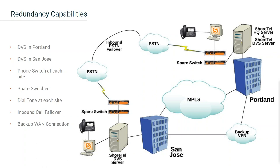Once you've corrected the switch failure, you can fail the phones back and put the spare switch back into standby mode. There's no licensing cost for the spare switch in standby, but when you fail over into production it triggers a 45-day license counter. You have 45 days to fix your switch issue, fail phones back to the primary switch, and put the spare switch back into standby before you have to purchase licensing. Usually we can get that switch back up same day or next day, even if we need a next-day replacement.